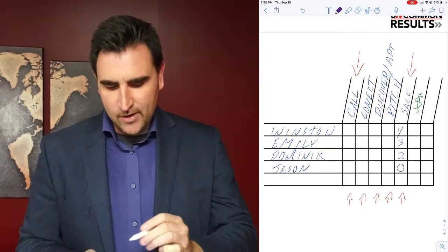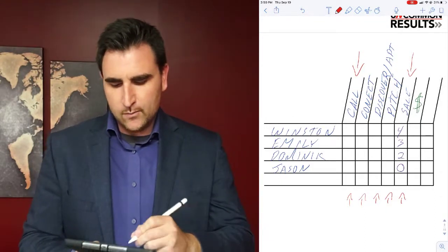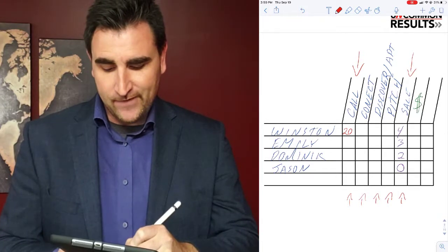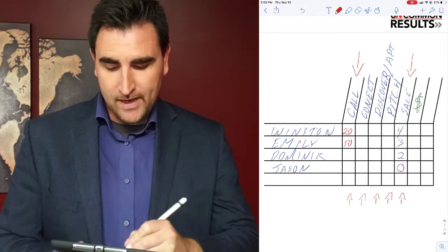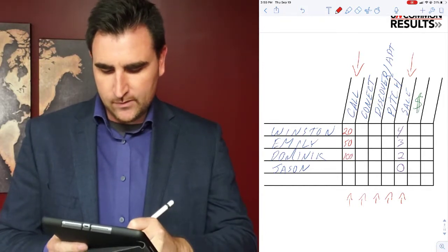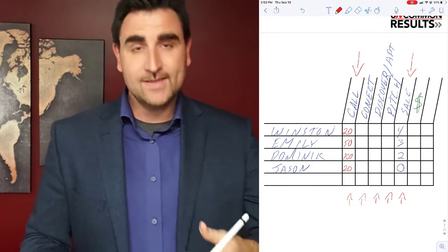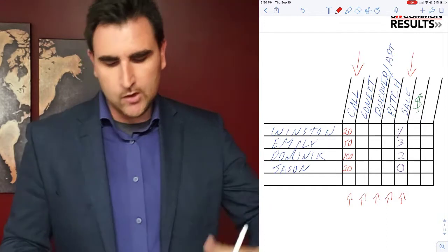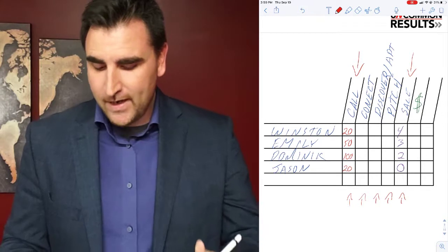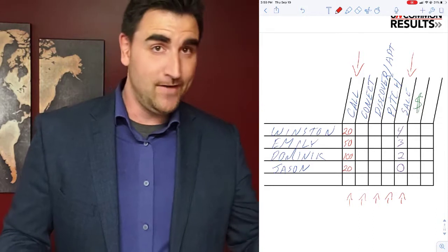But let's say we were tracking our calls. In order to make those calls, Winston was making 20 calls, Emily was making 50, Dominic was making 100, and Jason was also making 20. It looks like Winston is still the superstar - 20 calls for four sales, really has it going on.